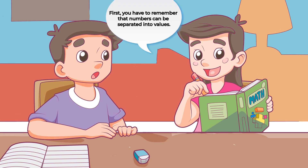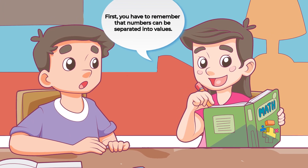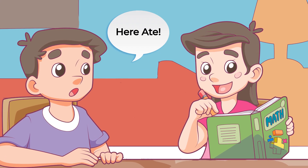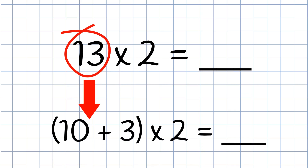First, you have to remember that numbers can be separated into values. Can I take a look at your problem? Here Ate! Look here! We can separate 13 into 10s and 1s. How many 10s and 1s are there in 13, Jason? I just need to look at the digit in each place value, right? So there's one 10 and three 1s. That's right! That means we can write 13 as 10 plus 3.